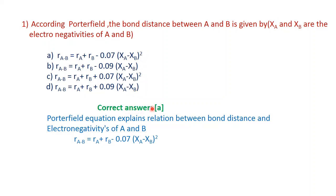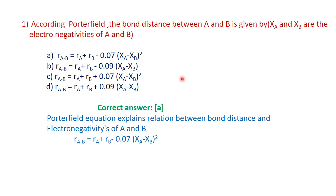The correct answer is Option A. The Schofield equation explains the relationship between bond distance and electronegativity difference of A and B. RAB equals RA plus RB minus 0.07 (XA minus XB) squared. RA and RB are the covalent radii, and RAB is the bond distance.